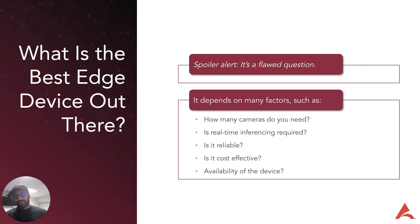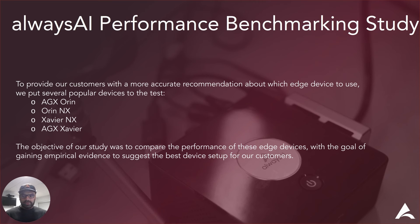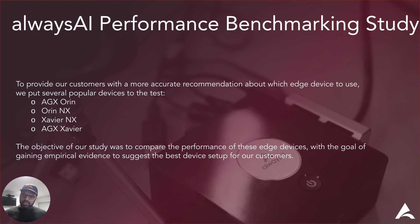Is it reliable, cost effective, and available? Availability is a point we could observe over the past two years — due to chip shortages, many devices were slowing down deployments. It's important to check availability before committing to a device. To provide our customers with more accurate recommendations, we put several popular devices to the test: AGX Orin, Orin NX, Xavier NX, and AGX Xavier. We study how each edge device performs for different application requirements and derive empirical evidence to suggest the best fit.